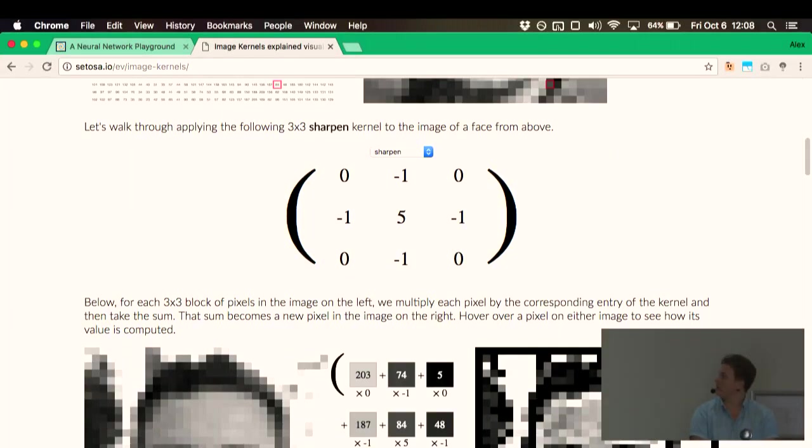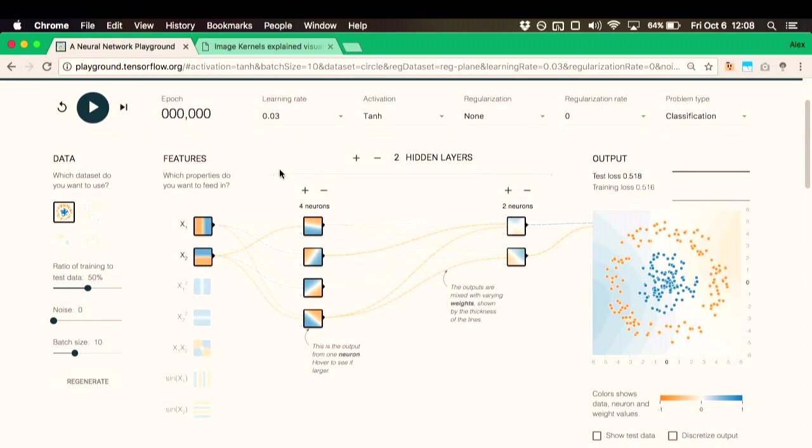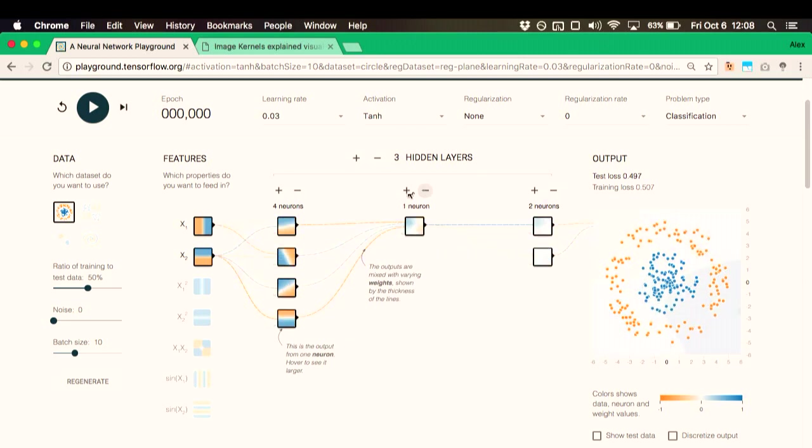And so, to throw a scary equation at you, the new weights is just the old weight minus some learning rate times the derivative of the error with respect to the weight. So, here we have our new weight. This is what we're going to update the next time we run an example through the neural network. It's the old weight minus some learning rate, which is just a very small number, times the gradient of the error with respect to the weight. And that really is just how much does the error increase when we increase this weight. And we're subtracting it because we want to make the error decrease.